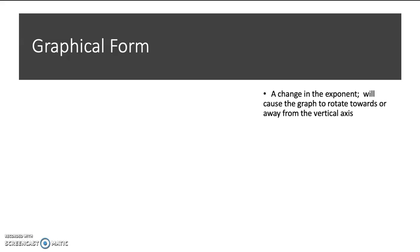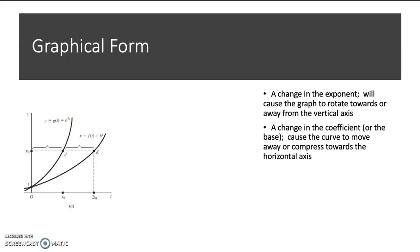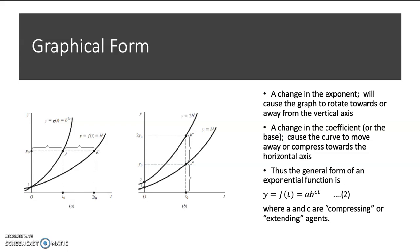A change in the exponent has the effect of rotating the exponential graph toward or away from the y-axis, as you can see here. Changing the coefficient will cause the curve to move away from or compress toward the horizontal axis. So, the general form of an exponential function is as follows: y as a function of t equals a·b to the power of c·t, where b is the main base, t is the main power or exponent, and a and c are the coefficients, or the compressing or extending agents.